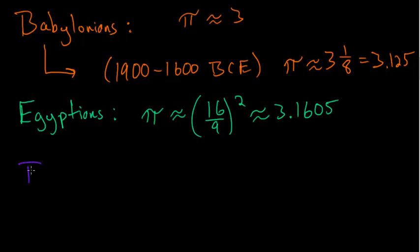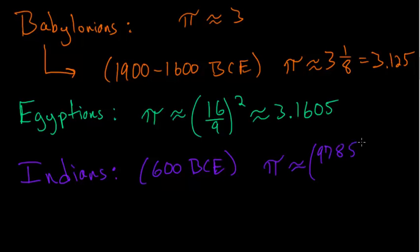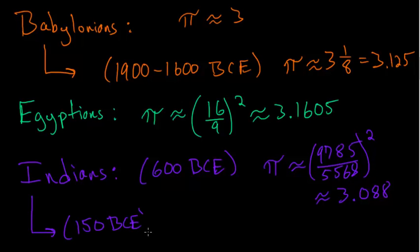And after these two civilizations, we have the Indians, and around 600 BCE, they used a value of pi that was 9,785 divided by 5,568, and this quantity is squared. So as a decimal, this is about 3.088. And in the year 150 BCE, the Indians used a value of pi that was the square root of 10, which as a decimal is about 3.1622. So you can see that they clearly improved their value of pi.